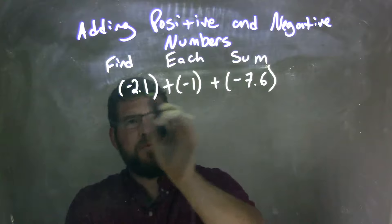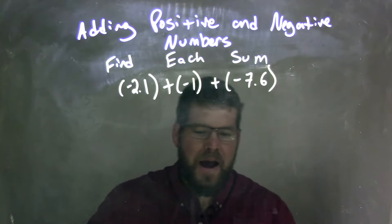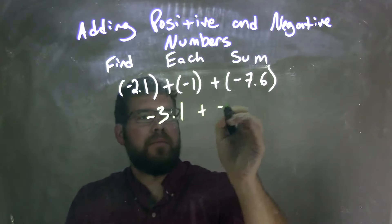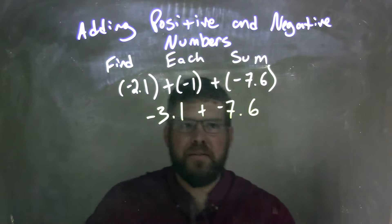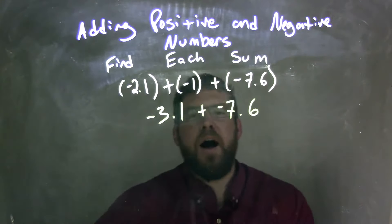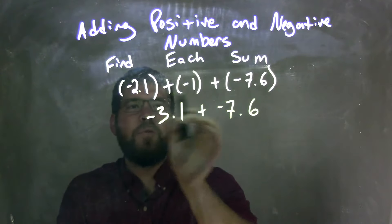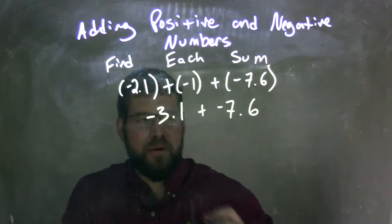Pretty straightforward. Negative 2.1 plus negative 1, and we're adding in a negative direction, that's just negative 3.1. And we bring down the negative 7.6. If you want to write it out, it's pretty easy. Negative 2.1 plus negative 1 is negative 3.1.